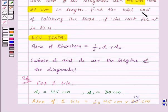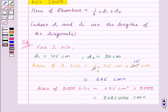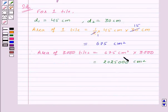Now we need to find the total cost of polishing the floor if the cost per meter square is rupees 4. We are given the cost in per meter square and we have the area in centimeter square. So now we will change the area from centimeter square to meter square.